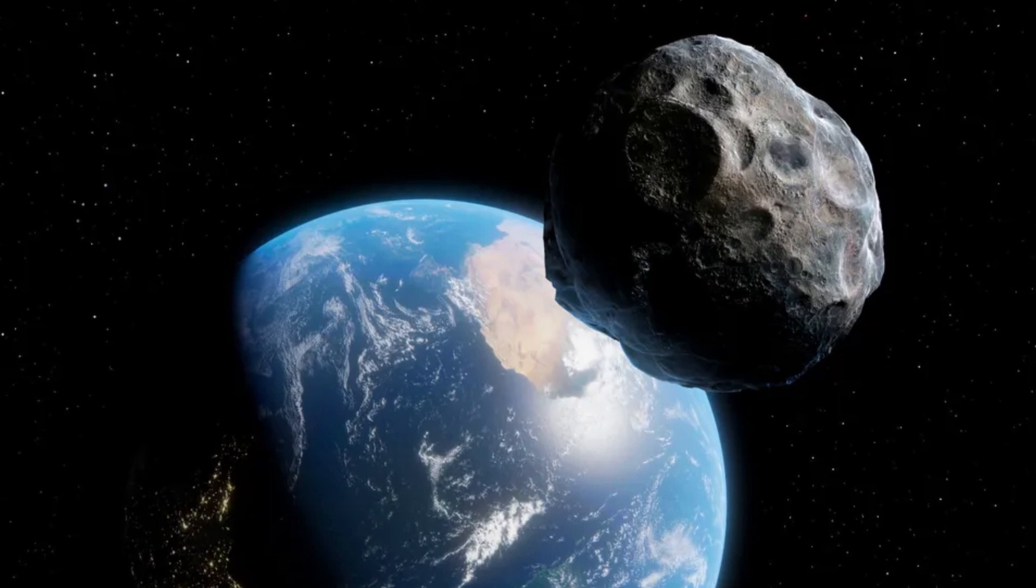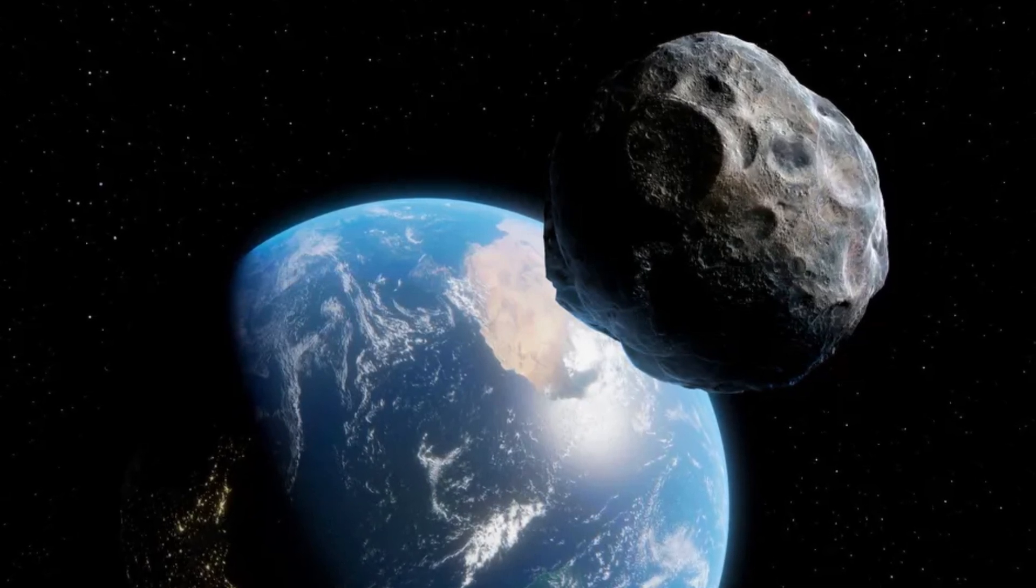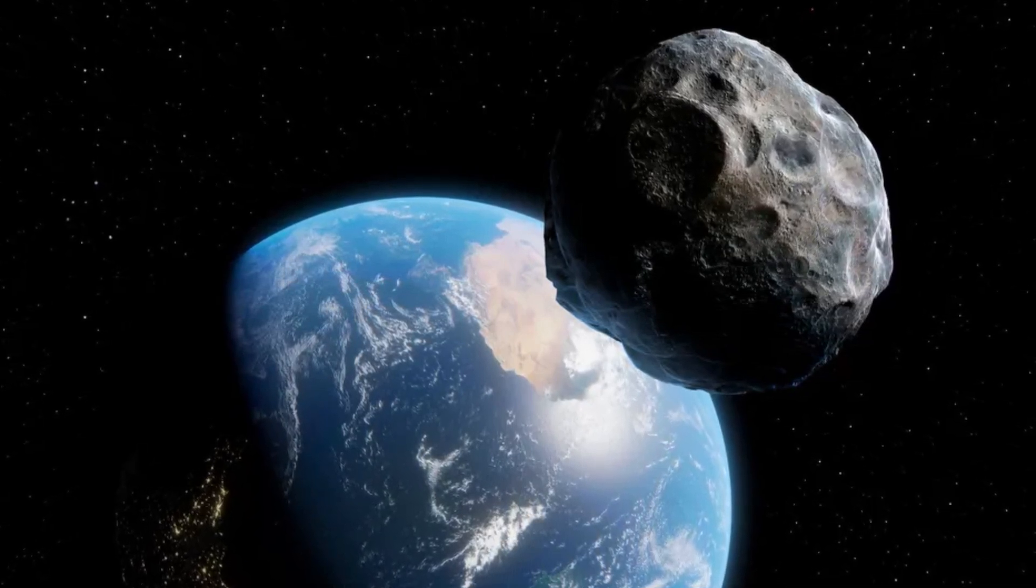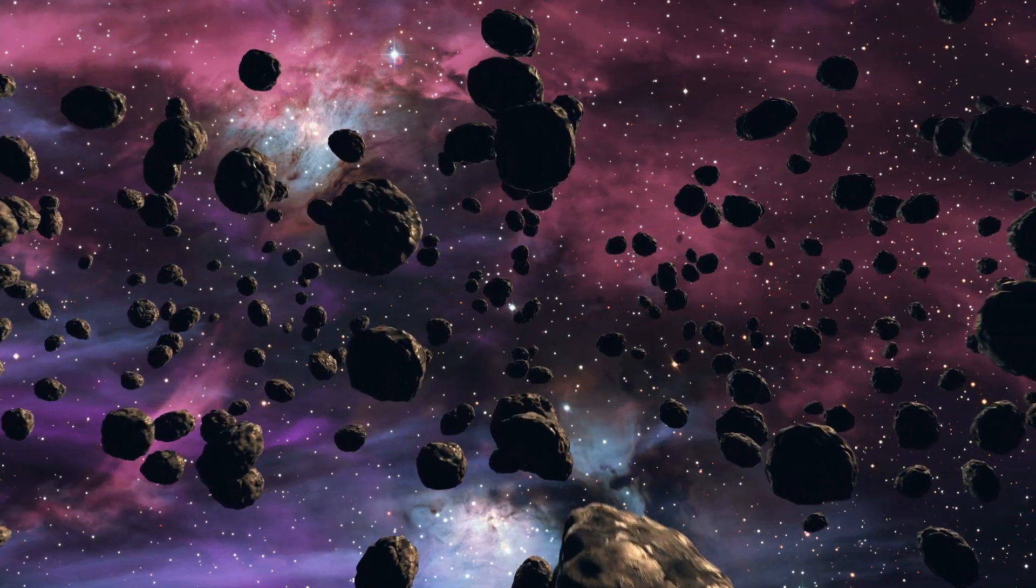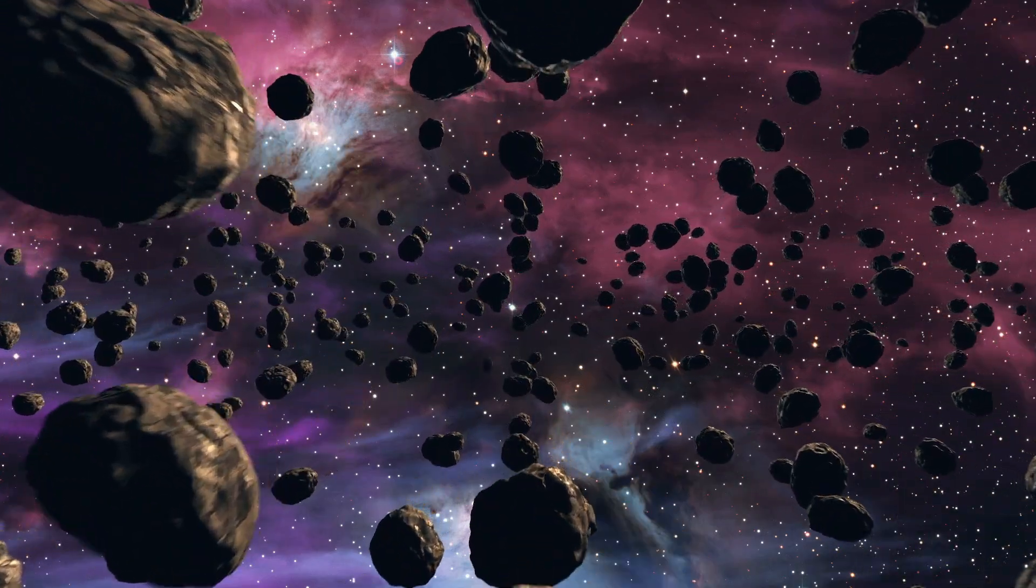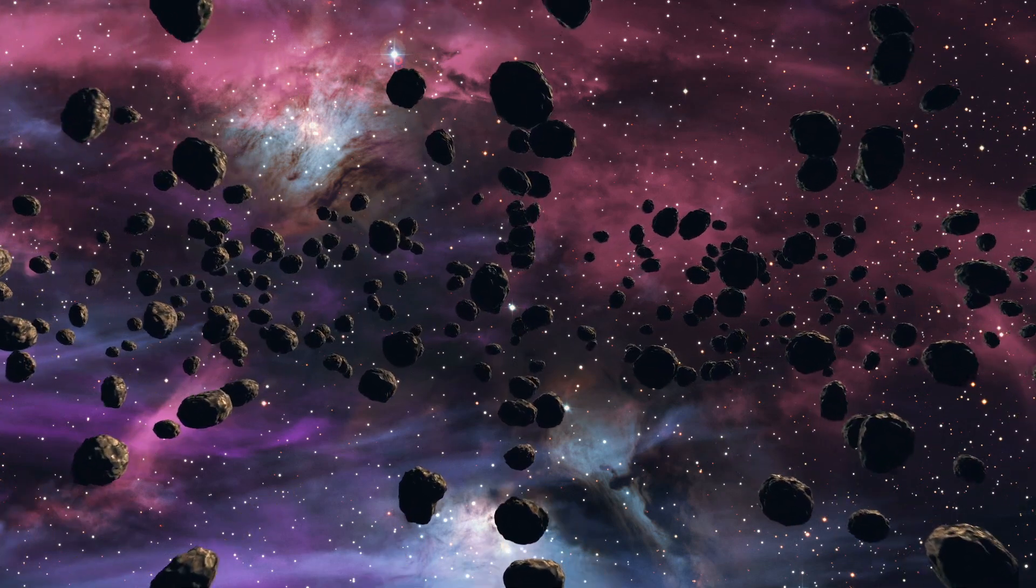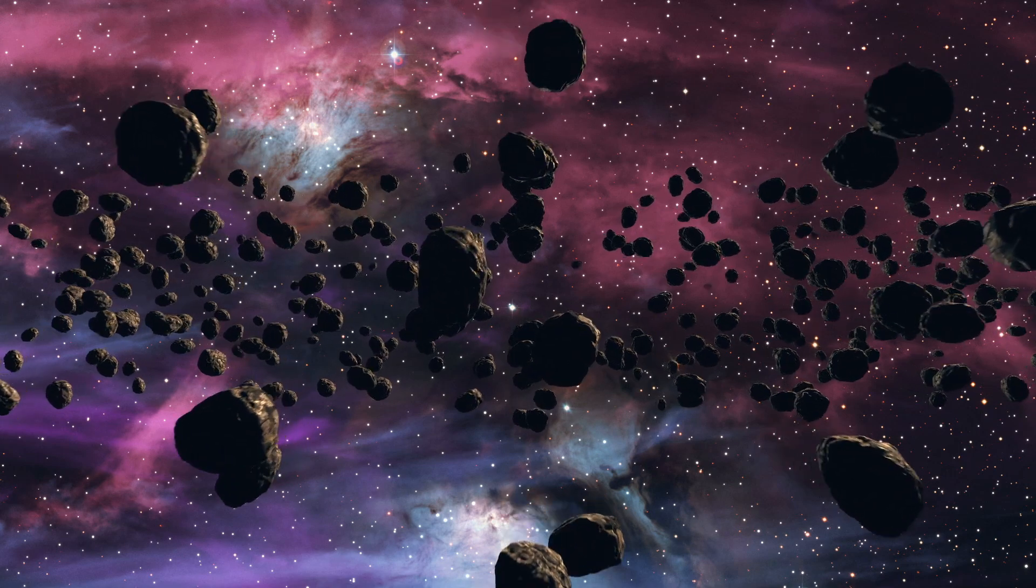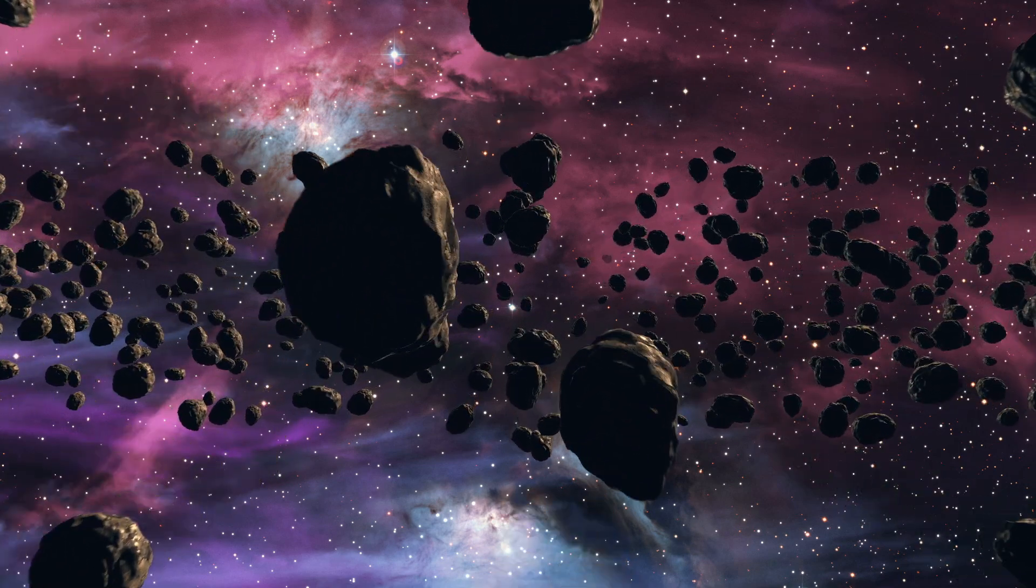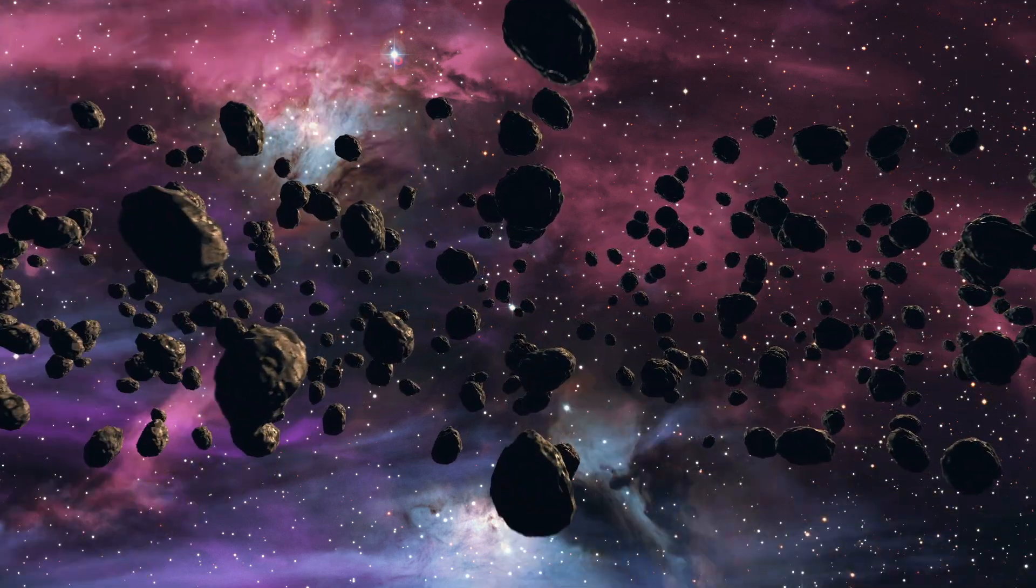The next question is, where do they come from? Most mini-moons are thought to originate from a population of near-Earth objects, or NEOs, asteroids and chunks of space rock that are in Earth's orbit. Under the right conditions, one of these objects can enter Earth's gravity zone and begin a temporary orbit.